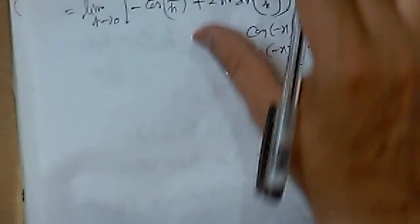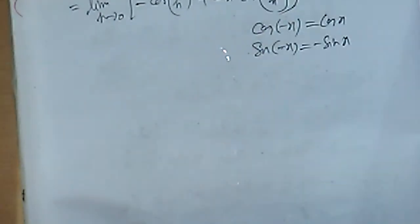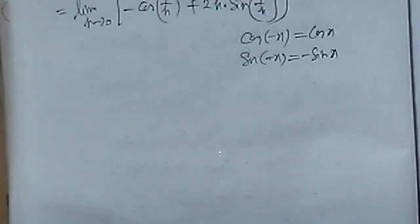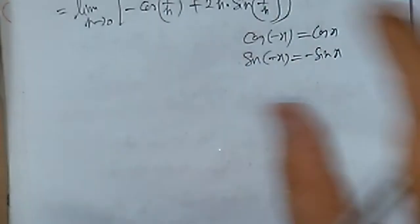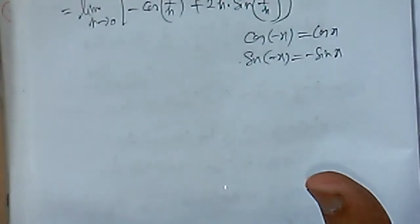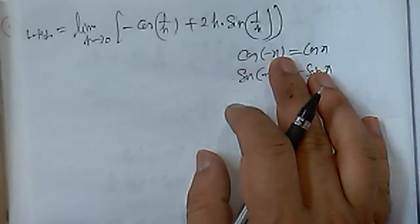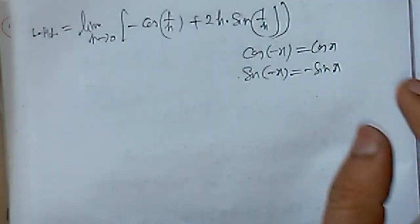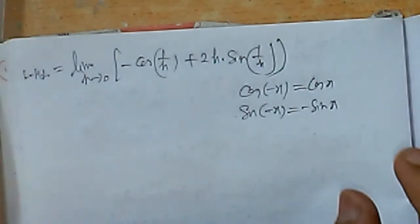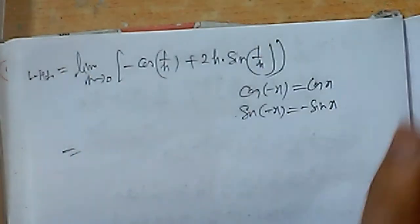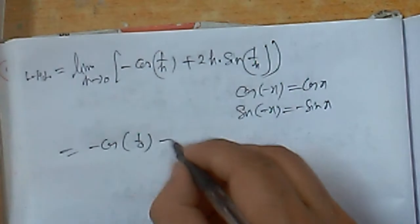We are finding the left hand limit. For f'(x) to be a continuous function, left hand limit must equal the function value. The function value of f'(x) at zero is 0. We now take the limit as h tends to 0 and substitute h = 0 to evaluate: -cos(1/h) + 2h·sin(1/h).